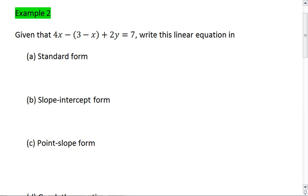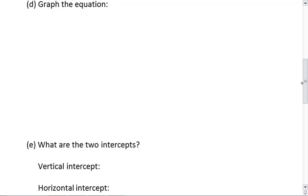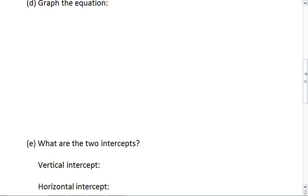We want to write this linear equation in standard form, then slope-intercept form, and then point-slope form. We're then going to graph the equation and determine what the two intercepts are, both the vertical and horizontal intercept.